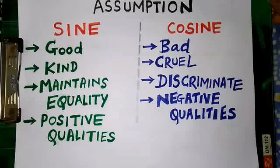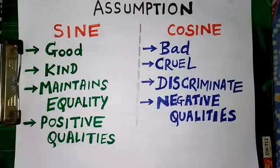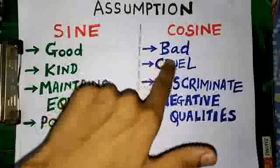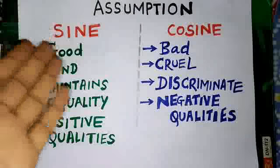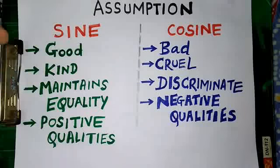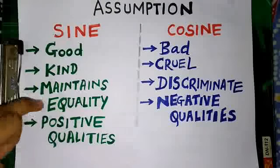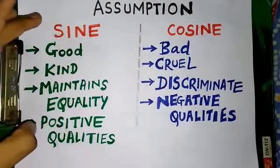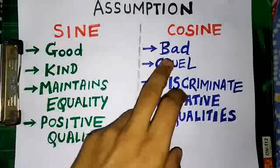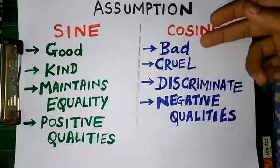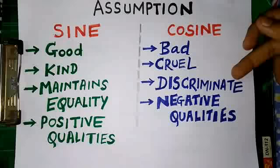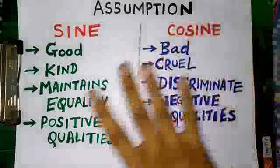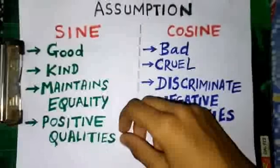Before I tell you the story, there's a simple assumption we need to make: sine is good and cosine is bad. So we're going to assign all positive qualities to sine — sine is good, sine maintains equality — and on the other hand cos is bad, it's cruel, it discriminates. Just add all the negative qualities in your mind for cos. With the help of this simple assumption we're going to learn all the formulas.